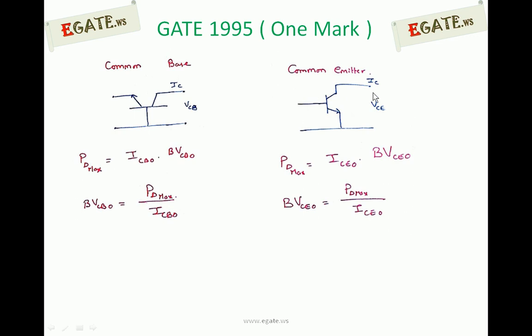If the base is open, all the current flows from collector to emitter only. By that time, PD maximum equals ICEO into BVCEO. From this, BVCEO is PD maximum by ICEO.